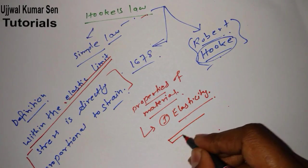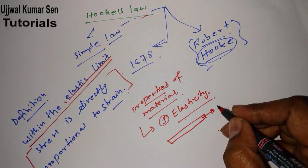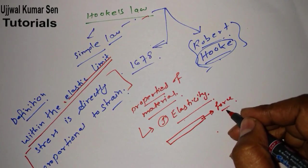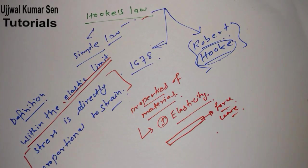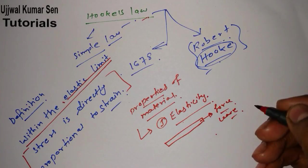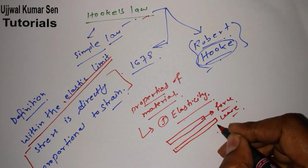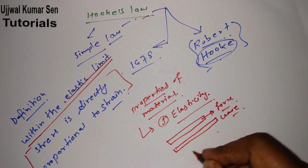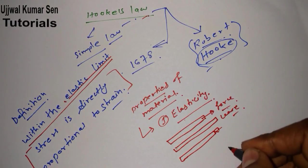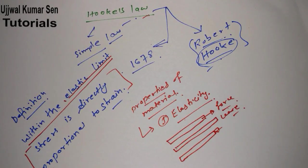Suppose there is a metal rod and we pull it with force for two or three seconds, then release it. After a few seconds, it will restore to its original position. This property — the ability to restore to its original shape after the load is removed — is known as elasticity.